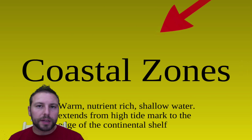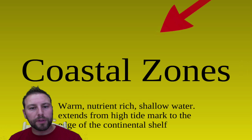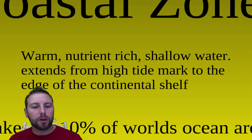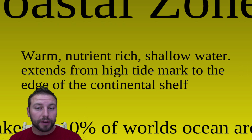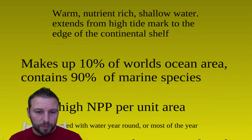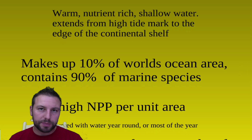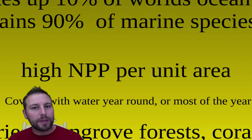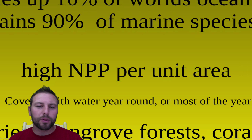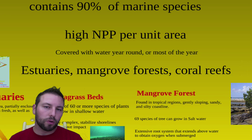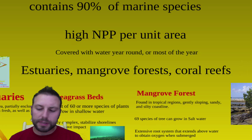Our first life zones are coastal zones, and there are a number of different types. These areas have a tendency to be warm, nutrient rich, with shallow water. They extend from the high tide mark all the way to the edge of the continental shelf. They make up roughly 10% of the world's ocean area but contain 90% of the marine species. Because light penetrates through this region, we have a high net primary productivity per unit area. These areas can be estuaries, mangroves, coral reefs, and a number of different sea shores.